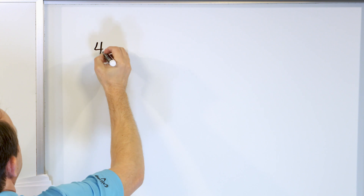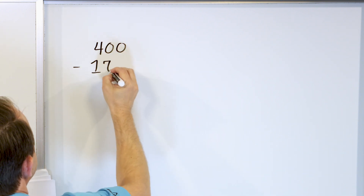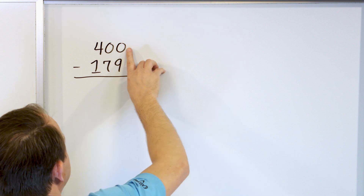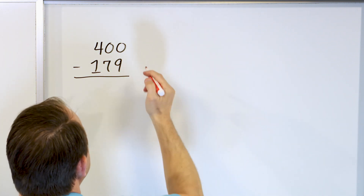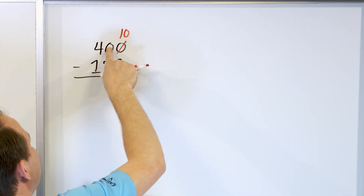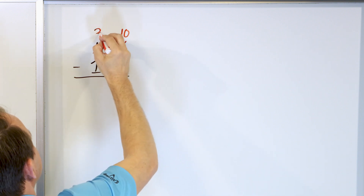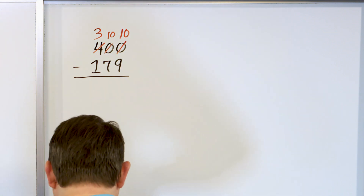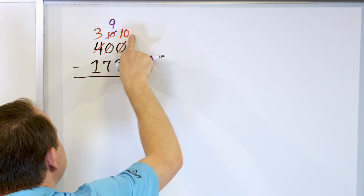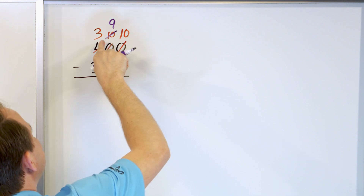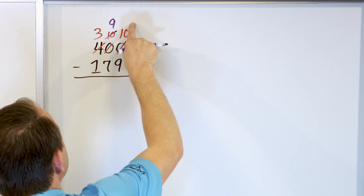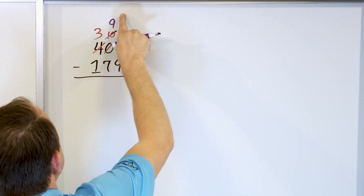What if we have 400 and we want to subtract 179? This one's going to be a little interesting. 0 minus 9 — we can't do it; 0 is not big enough, so we have to make it a 10. We borrow from the next column, but there's nothing there, so we skip over and make the hundreds digit a 3 to borrow, making this column a 10. But remember, as soon as we give something in the middle column, we have to immediately borrow from it and make it a 9.